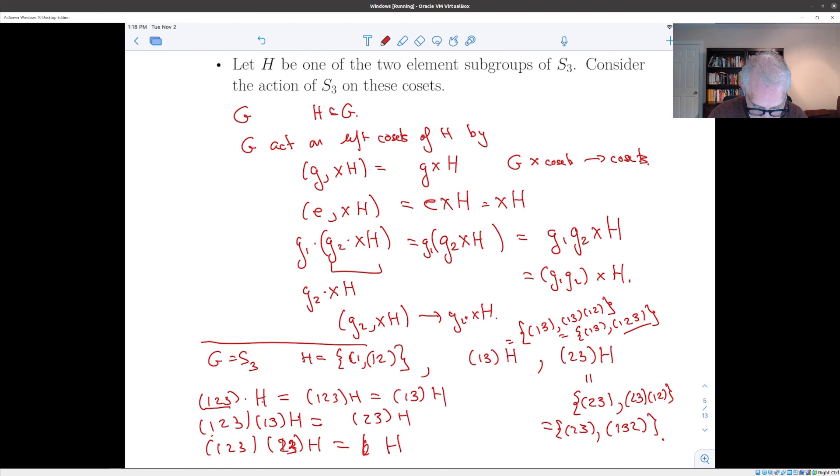So the point here is that when you consider the action of this 3 cycle on the cosets, it cyclically permutes them. It sends H to (1, 3)H, (1, 3)H to (2, 3)H, (2, 3)H to H. And you can work out the action of the other elements of S_3 through this coset multiplication process.